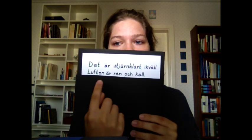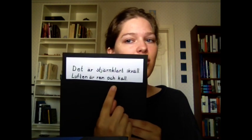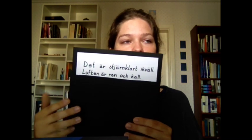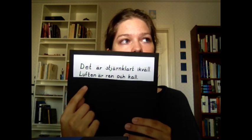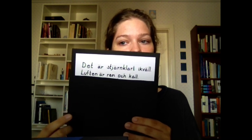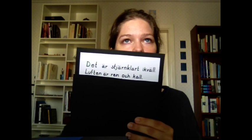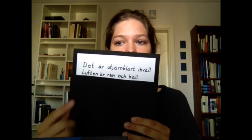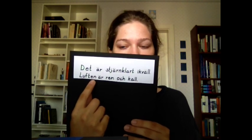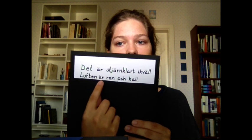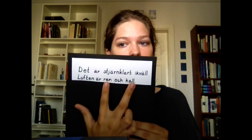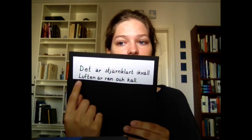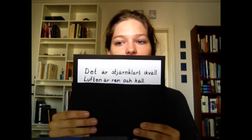And then we have the next sentence: Luften är ren och kall. Luft means 'air'. And I hope you remember that if you want to make a common noun definite, you just put -en at the end instead of putting en in front of the word. So luften är means 'the air is', ren means 'clean', och means 'and', kall means 'cold'. And you can see there are no t's, because it's a common noun. So: luften är ren och kall — the air is clean and cold.